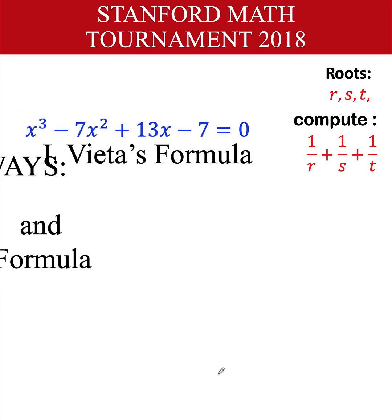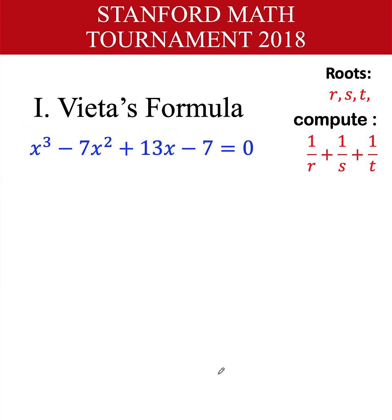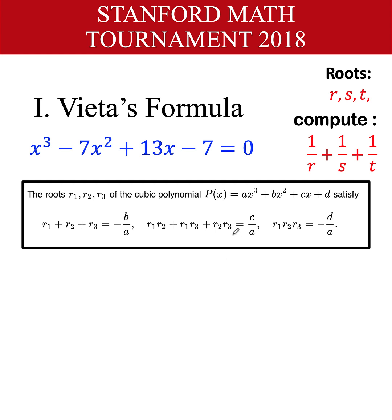Let's begin with the first method: Vieta's formula. If we are given the cubic polynomial ax cubed plus bx squared plus cx plus d, and its roots are r sub 1, r sub 2, and r sub 3, then the sum of the three roots is equal to negative b over a — the negative of the coefficient of the x squared term over the coefficient of the cubic term.